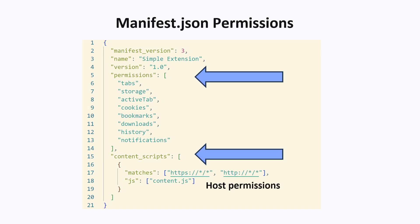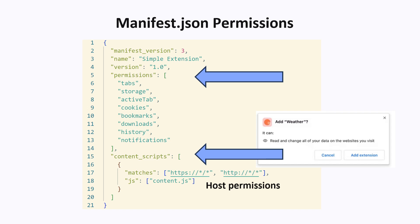Upon installing a Chrome extension, the user will be presented with a warning dialogue explaining what can be done with these permissions. For example, it can read and change all your data on the websites you visit. This sounds kind of scary, and it is, because if you allow JavaScript to be run on all websites, then it can read and write any content on any page that you are browsing. Even if the extension is not doing anything malicious, there is no way for the platform to know that, so it can only assume the worst case scenario.